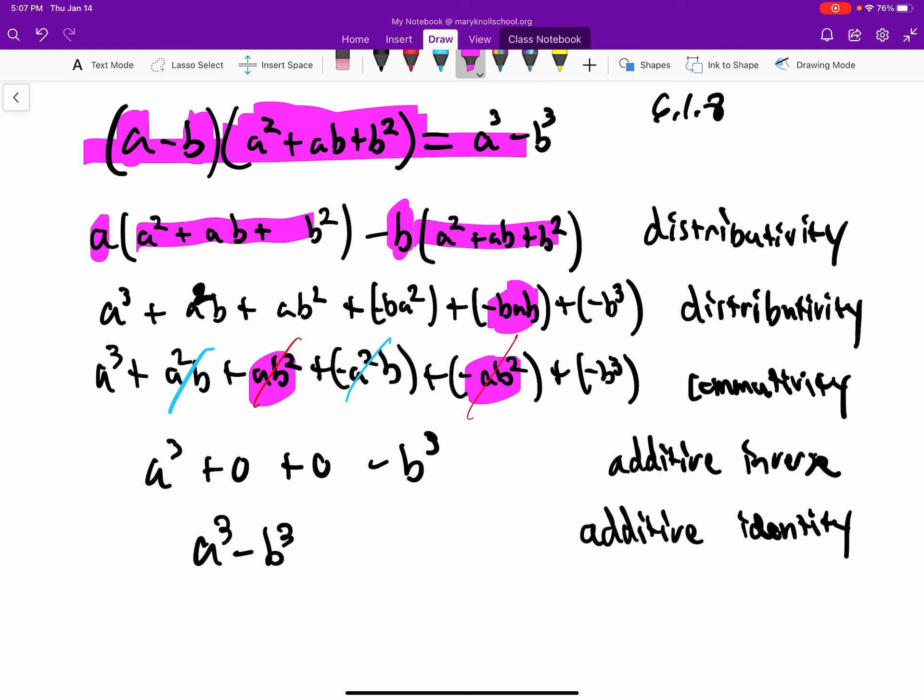All right, so we use the commutativity property twice there, we use it all in one go. Then we use the additive inverse, so these are going to cancel and create 0.